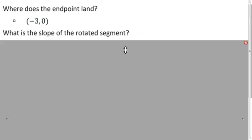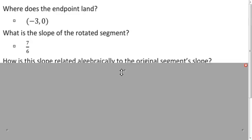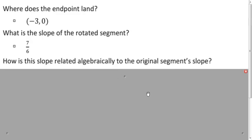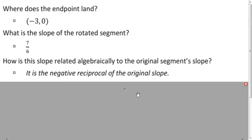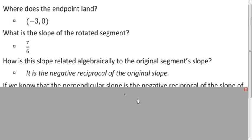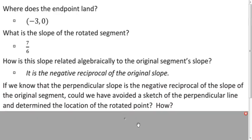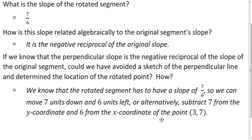So what was the slope of the rotated segment? We already said: 7 sixths. How is that related to the original slope? They're negative reciprocals — their product is negative 1. Now, how could we use the slope of the perpendicular line to figure out where the rotated point is without actually using a graph? Well, we could just modify the coordinates of our points: instead of physically moving the point 7 down and 6 to the left, we could just subtract 7 from the y-coordinate and 6 from the x-coordinate to get the same answer: (negative 3, 0).